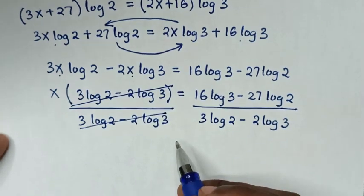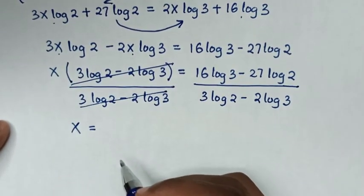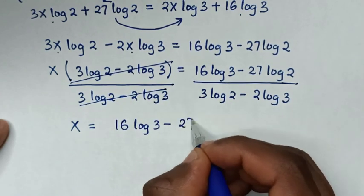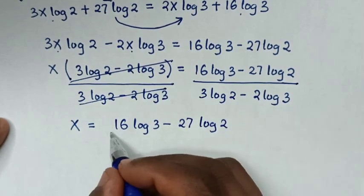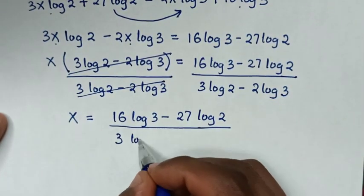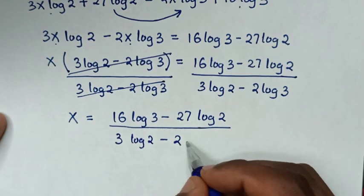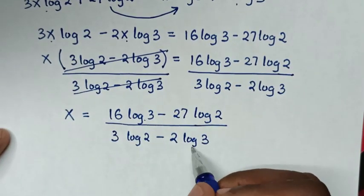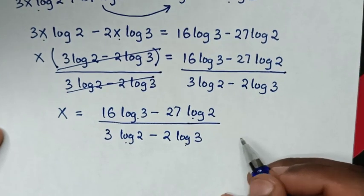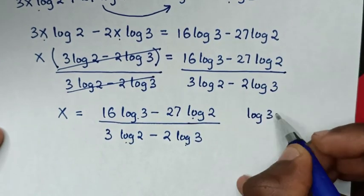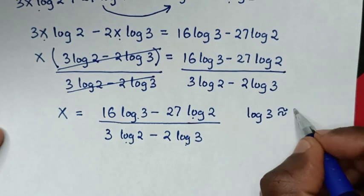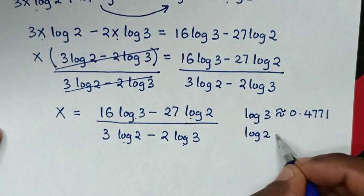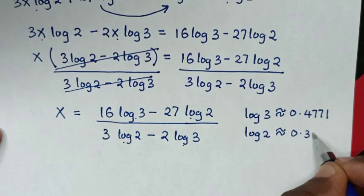This and this will cancel, so it will be x is equal to (16 log of 3 minus 27 log of 2) over (3 log of 2 minus 2 log of 3). From here we have log of 3 and log of 2, and we are given that log of 3 is approximately equal to 0.4771 and log of 2 is approximately equal to 0.301.